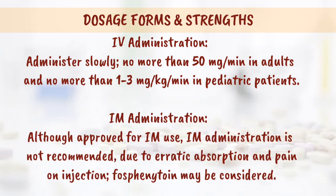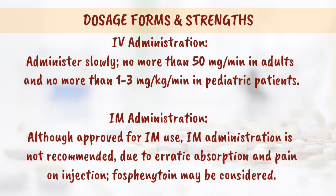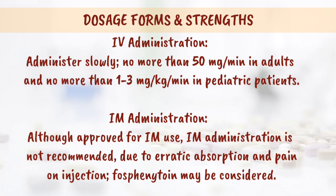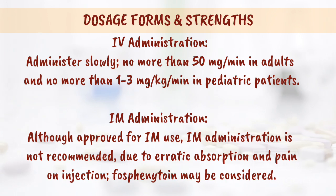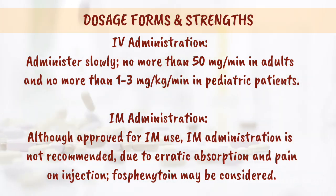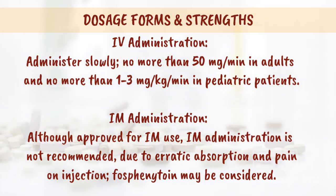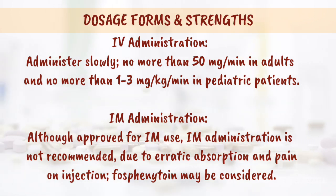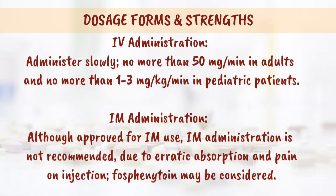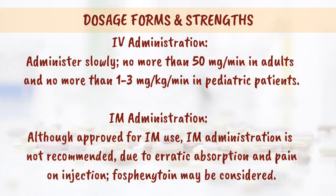For IV administration, administer slowly — no more than 50 mg per minute in adults and no more than 1 to 3 mg per kg per minute in pediatric patients. Intramuscular administration, although approved, is not recommended due to erratic absorption and pain on injection; fosphenytoin may be considered instead.